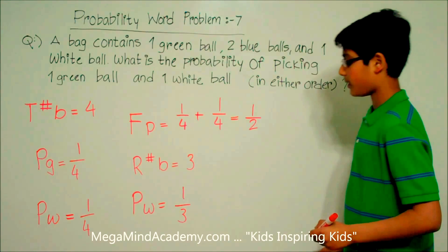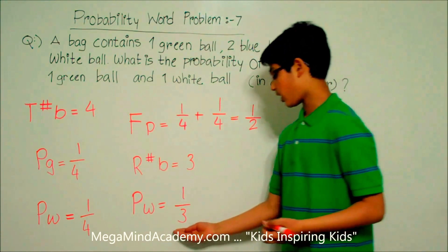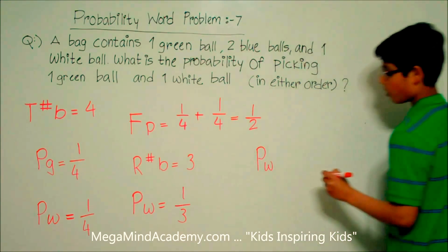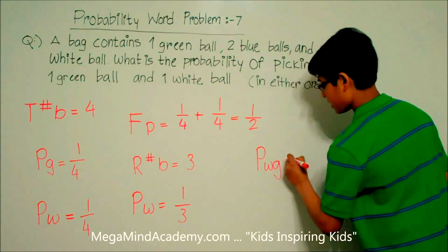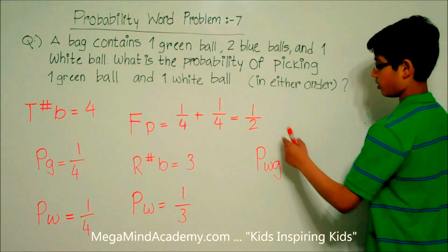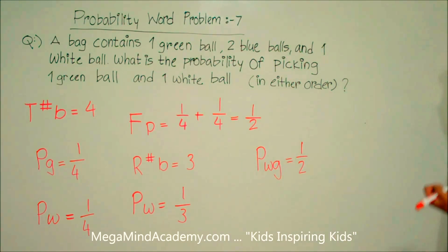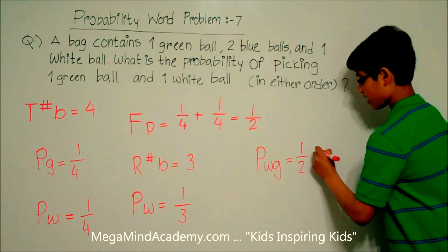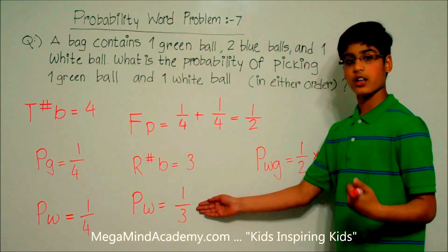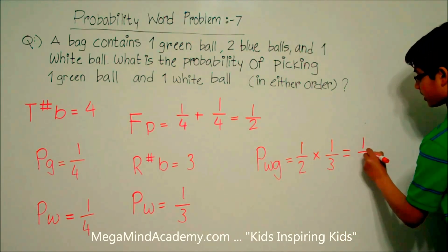The probability of picking a white ball after picking the green ball as your first pick is one third. So the probability of picking a white ball or green ball — P(W,G) — is equal to one half times one third, which equals one sixth.